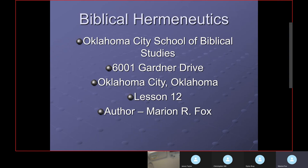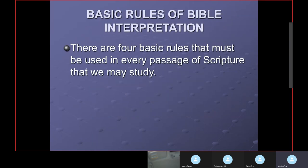This is our 12th lesson on biblical hermeneutics. We've laid a lot of groundwork because we need some background for how we approach the Bible to begin with. Now we're going to get some rules of interpretation — simple rules to begin with — and we'll elaborate more as we develop this system further.